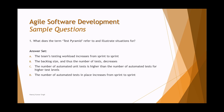Option A — the team's testing workload increases from sprint to sprint — is not exactly related to the test pyramid. Option B — the backlog size and thus the number of tests decreases — is incorrect; it increases. Option C — the number of automated unit tests is higher than the number of automated tests for higher test levels — is correct, reflecting CI where we do more automated unit tests compared to integration and system levels. Option D — automated tests increase from sprint to sprint — is not specific to the test pyramid. So C is the right answer.